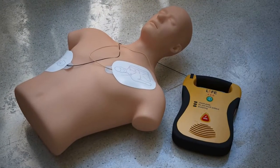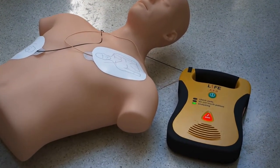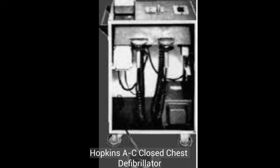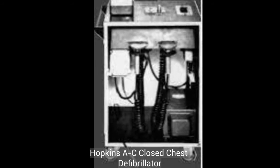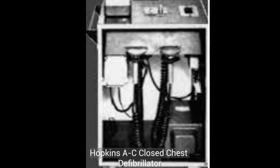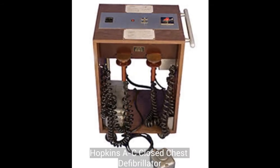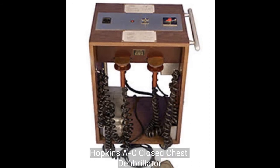This research was the start of the creation of the modern automated external defibrillator. Six years later, in 1957, Kouwenhoven and his team created the Hopkins AC closed chest defibrillator, the first external defibrillator. The defibrillator weighed 200 pounds and was mounted on a rolling cart. The machine delivered a defibrillating counter shock of 5 amperes at 440 volts per quarter second via two main electrodes.